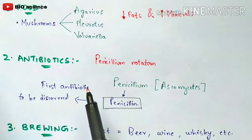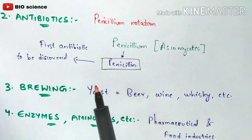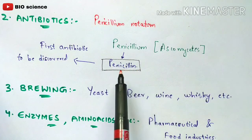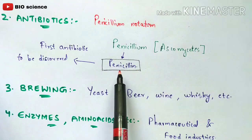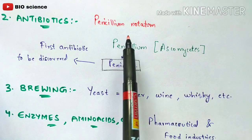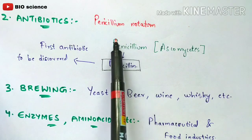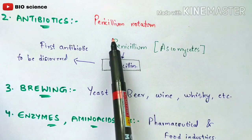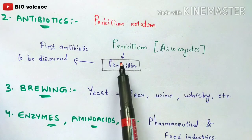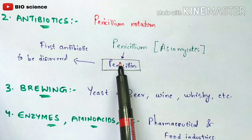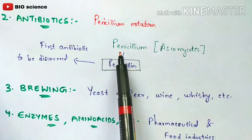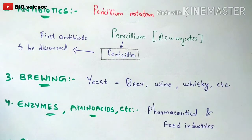The second use of fungi is in the production of antibiotics. Penicillin is the first antibiotic to be discovered, and it is obtained from a fungi called Penicillium notatum. This fungi belongs to the Ascomycetes family, and from Penicillium notatum the antibiotic penicillin has been produced — making it the first antibiotic discovered and produced.